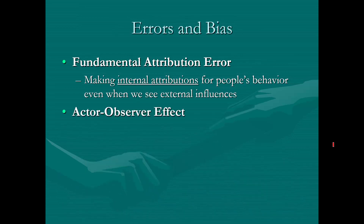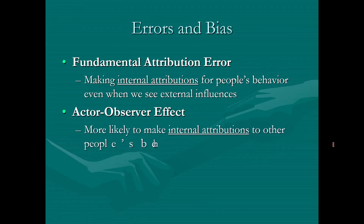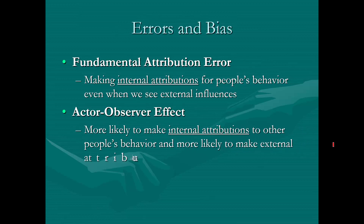The second error we're going to look at is something called the actor-observer effect. This one's a little bit different. Here, we're more likely to make internal attributions for other people's behavior, but when it comes to ourselves, we're more likely to make external attributions. When I'm focusing on other people, I may go with the internal, but if I'm doing the same thing, I may use external factors to explain that same behavior.